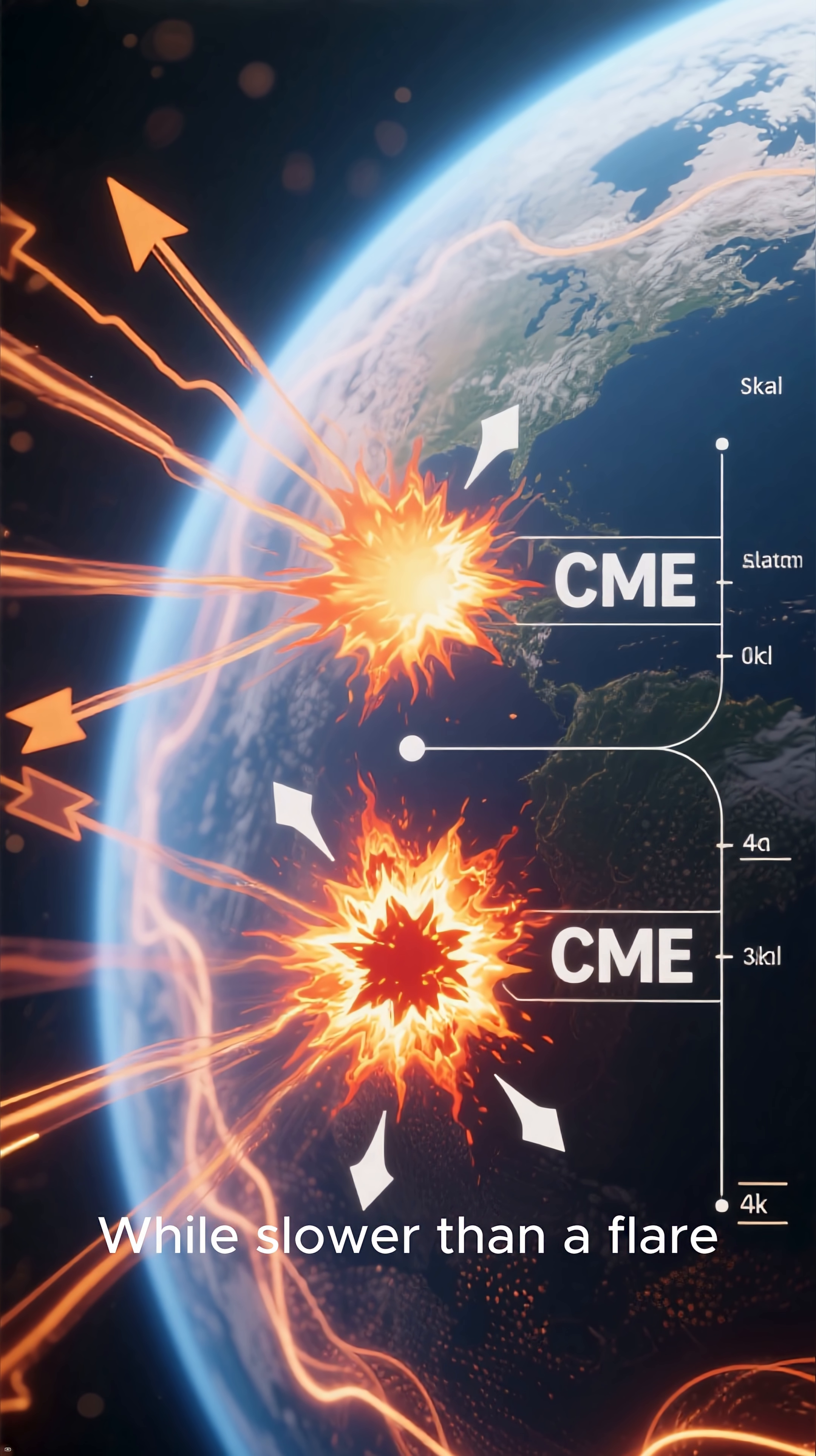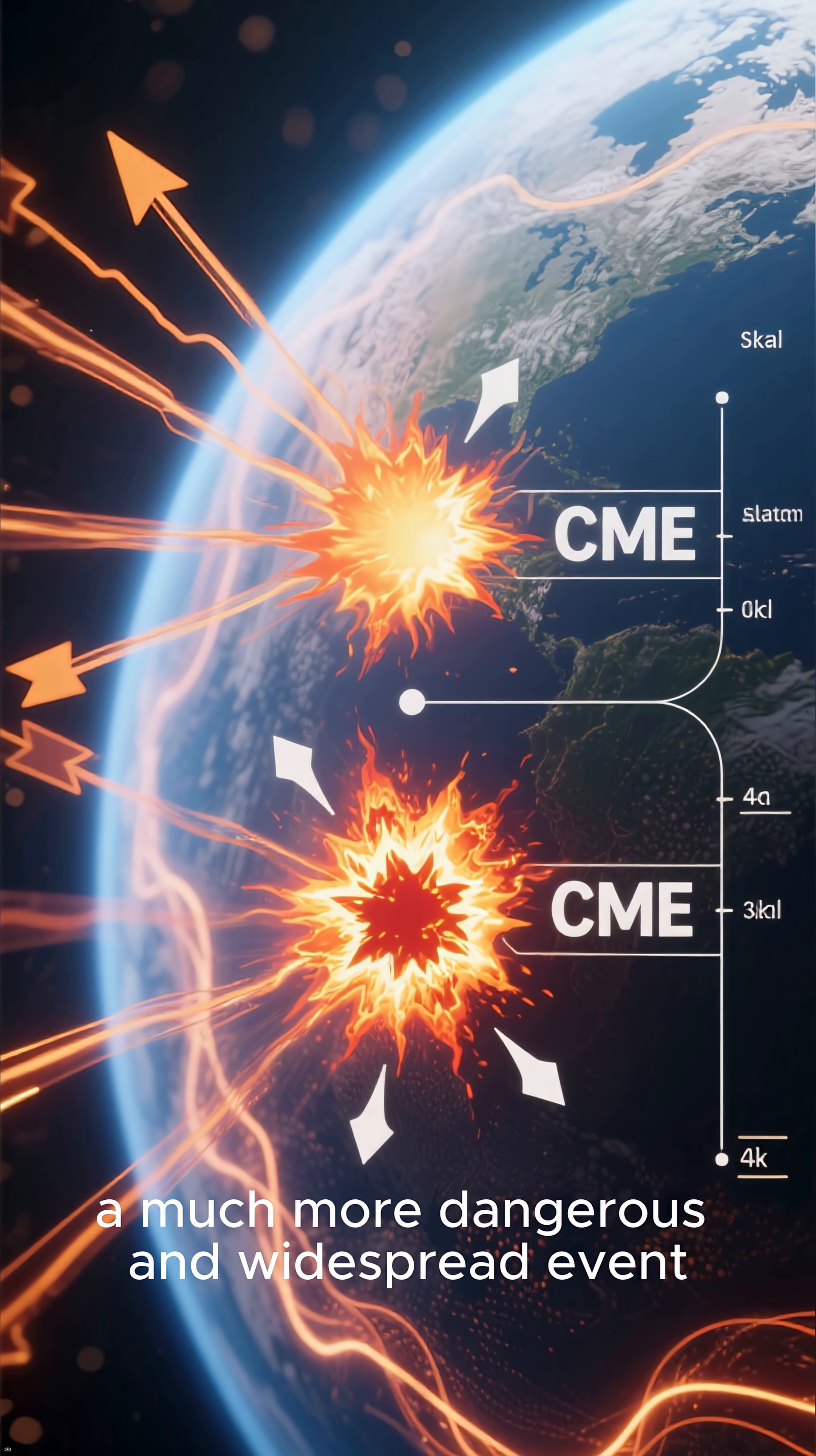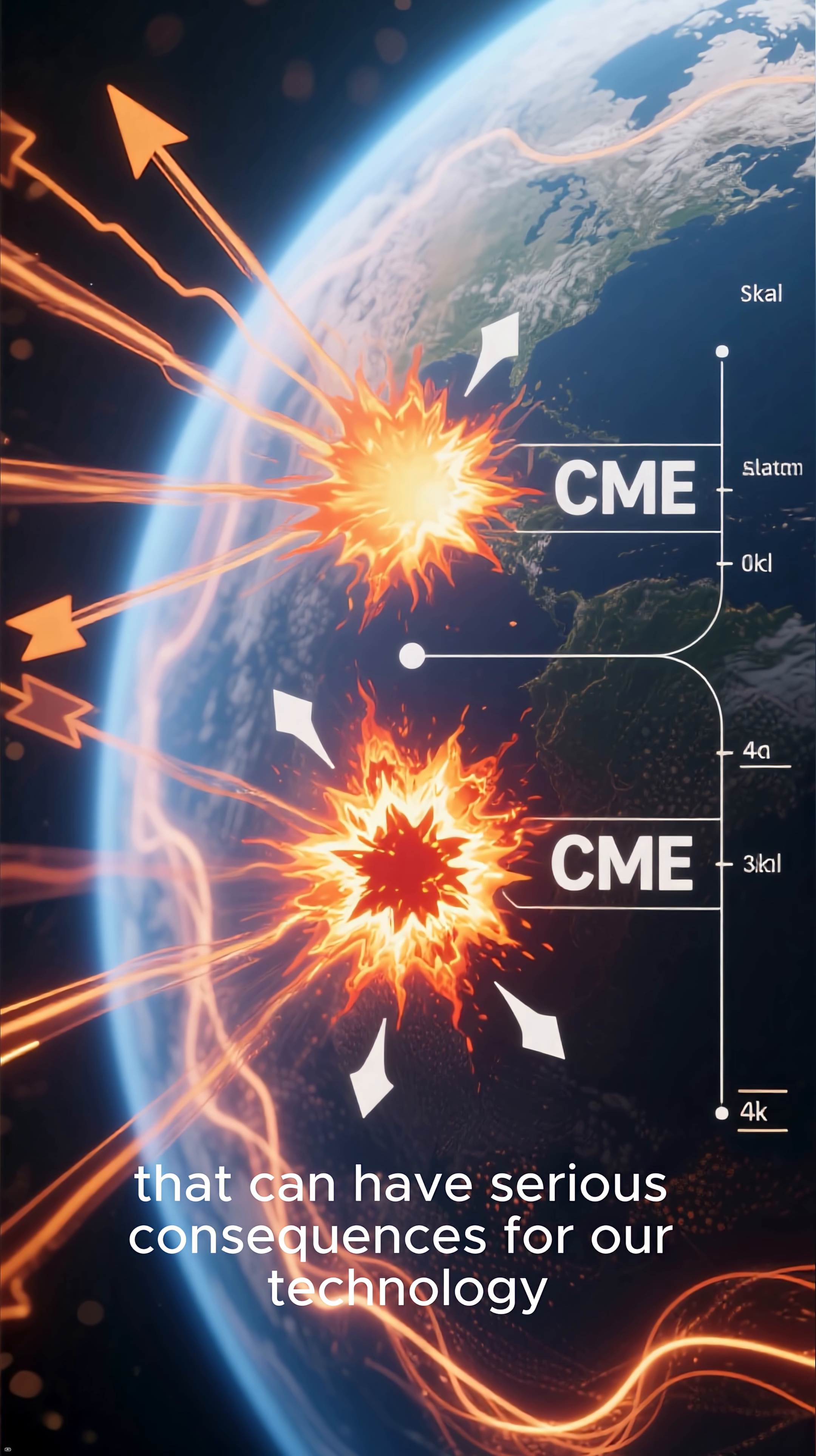While slower than a flare, a direct hit to our planet's magnetic field can trigger a powerful geomagnetic storm, a much more dangerous and widespread event that can have serious consequences for our technology.